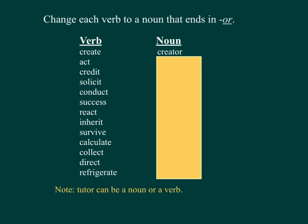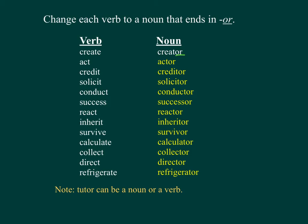Change each verb to a noun that ends in OR: Creditor, Solicitor, Conductor, Successor, Reactor, Inheritor, Survivor, Calculator, Collector, Director, Refrigerator. Note: Tutor can be a noun or a verb.